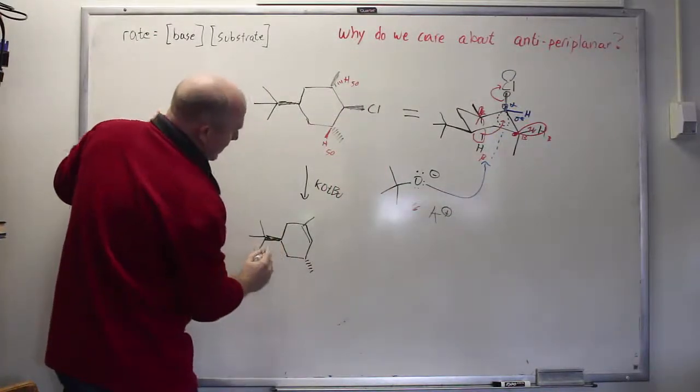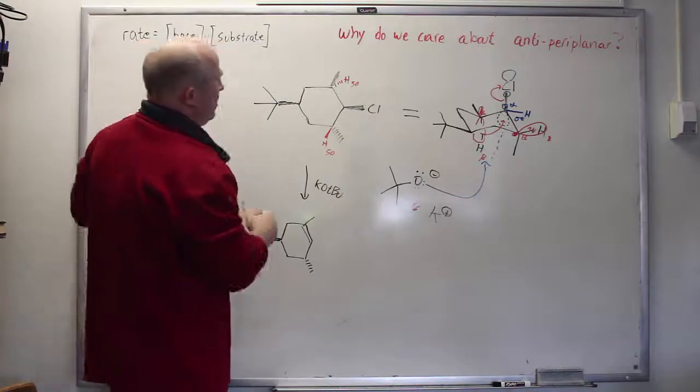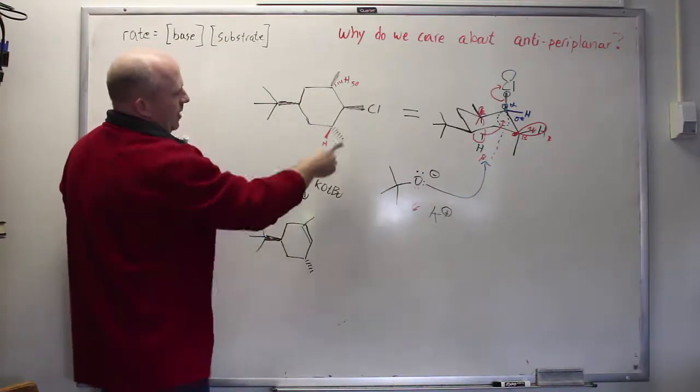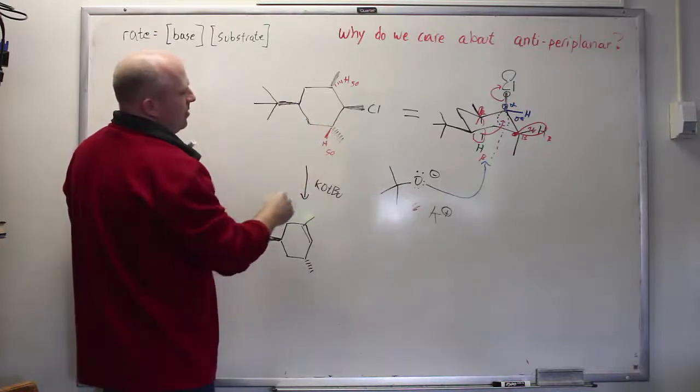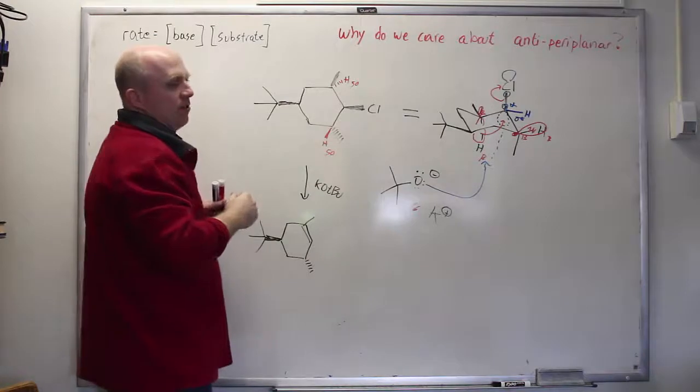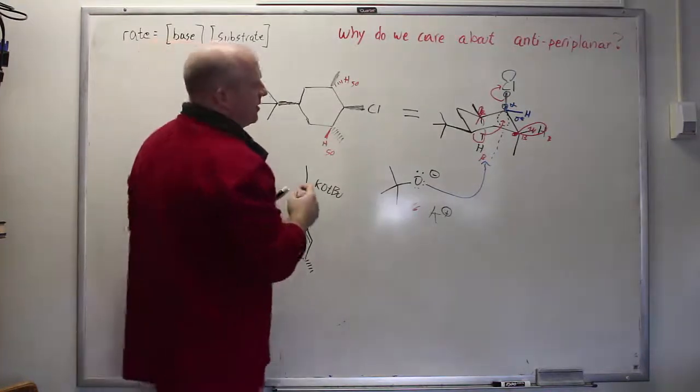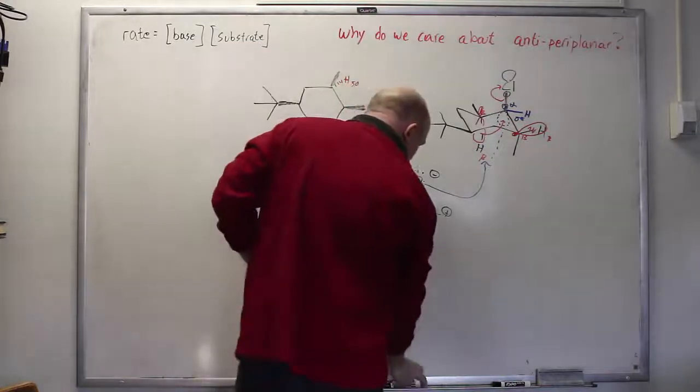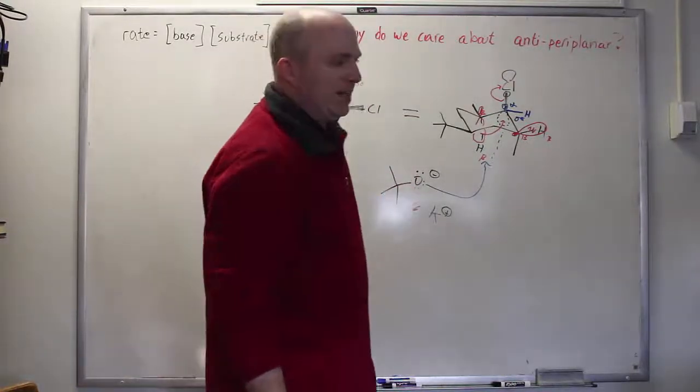Said another way this is going to be a stereospecific reaction. Do this elimination and you get this product and only this product. You get no product from elimination of this hydrogen and that's because this hydrogen is poorly aligned with the sigma star orbital that it needs to donate its electron density into. If you can't follow this easily on the board you definitely want to build the model and take a look at it.